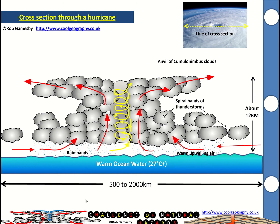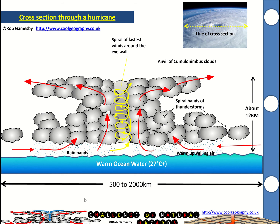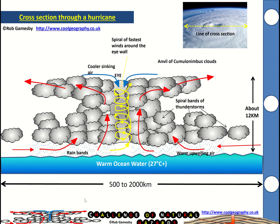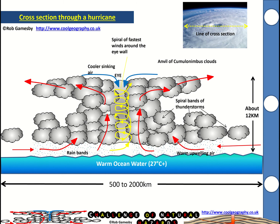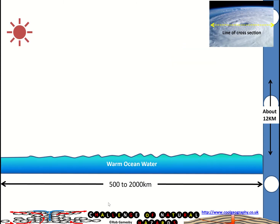The motion of air is corkscrew within the eye wall, and that's where the wind speeds are at their fastest. You'll also get some sinking air into that eye. You can see the eye in the centre there — the whole storm spins around that due to the Coriolis force.